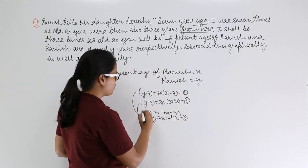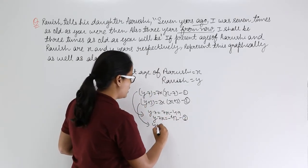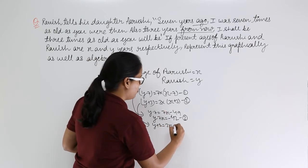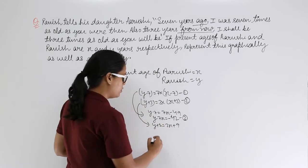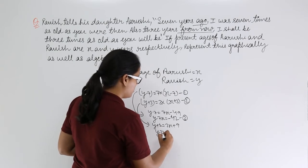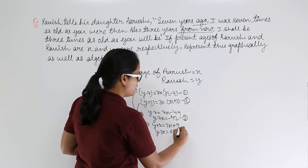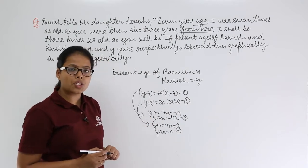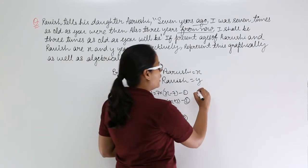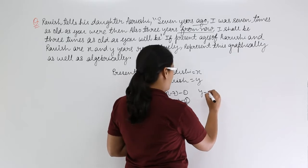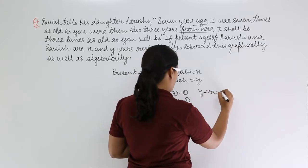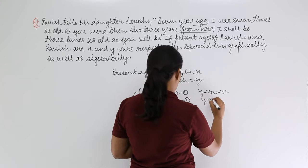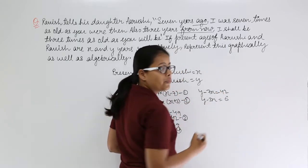Now for equation two: y plus three equals three times (x plus three), which gives y plus three equals three x plus nine. Solving this, we get y minus three x equals six. This is equation four. So now we have two equations: y minus seven x equals minus forty-two, and y minus three x equals six.